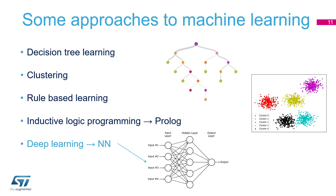We have rules-based learning, which is something different. We have inductive logic programming — Prolog — you can look it up on the web. These are different kinds of things, mixing statistics and mathematical phenomena. And the last one, which is the one we are interested in today, is called deep learning, using neural networks — deep learning neural networks. This is where we are focused. But deep learning is again a subsystem of machine learning.